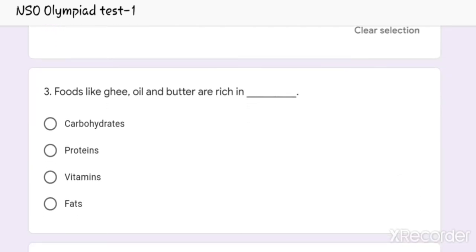Question number 3. Foods like ghee, oil and butter are rich in dash. Option 1: Carbohydrates. Option 2: Proteins. Option 3: Vitamins. And option 4: Fats. And the correct answer is Option 4, Fats.